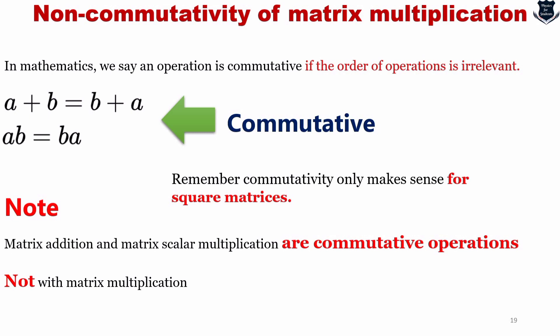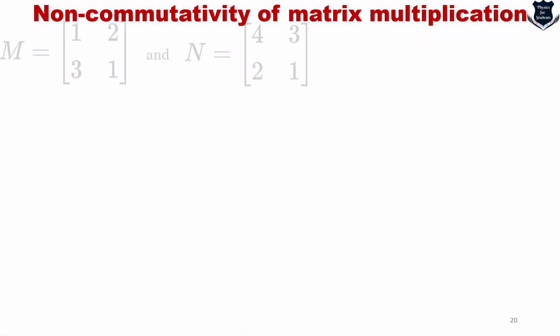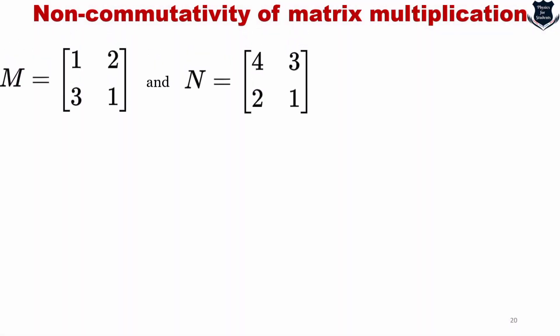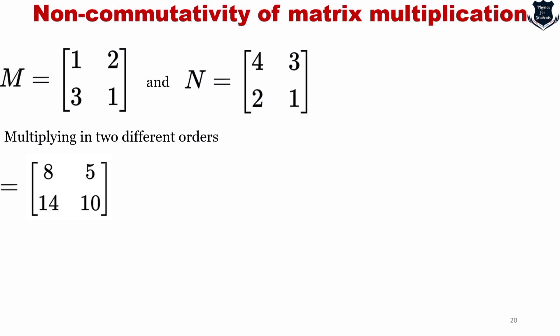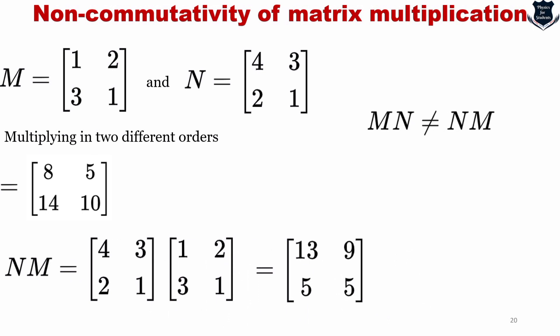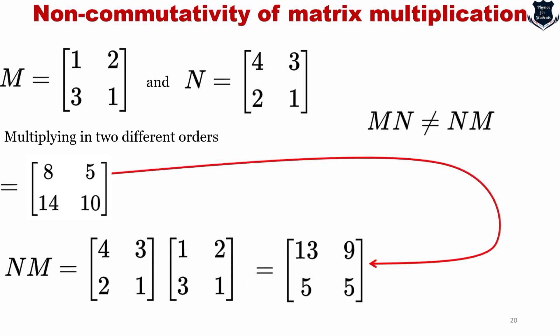Let us see a quick example to make this clear. Given matrices M and N, multiplying in the first order gives results 8, 14, 5, 10, whereas multiplying in the reverse order gives 13, 5, 9, 5 — which is clearly not the same. This shows that M·N is not equal to N·M, demonstrating that matrix multiplication does not follow the commutativity property.